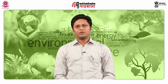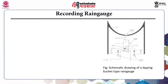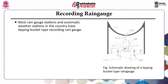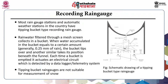Rainfall is the most important weather parameter. There are different types of recording rain gauges, but the most important one is the tipping bucket type. Most rain gauge stations and automatic weather stations employ this technology. Rain water gets filtered through a mesh screen and collects in a bucket. When water accumulates equal to 0.25 millimeter of rain, the bucket gets emptied and another takes its position. Each time a bucket is emptied, it activates an electronic circuit detected by a data logger or telemetry system. Tipping bucket rain gauges are not suitable for measurement of snow.